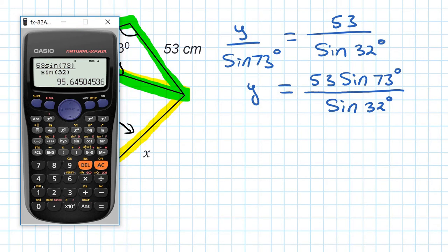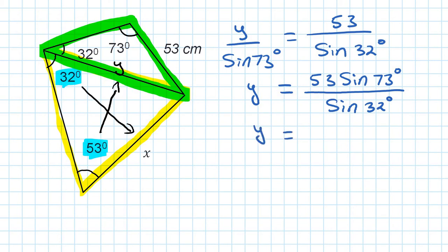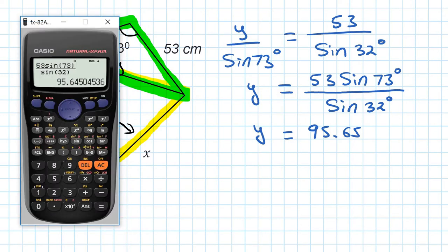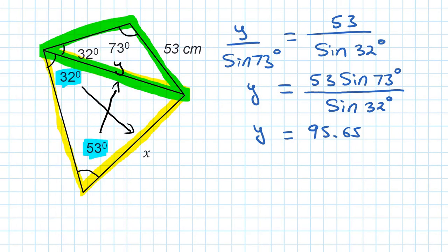I multiply both sides by sine of 73, so y is equal to 53 times sine of 73 degrees, all over sine of 32 degrees. Typing this into the calculator I get 95.64504536 and so on. I write y approximately equal to 95.65, but I'm going to store the full number in the calculator. I press shift, store, then A to store the answer in memory variable A.